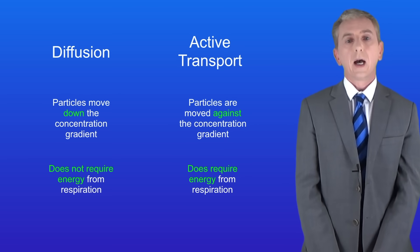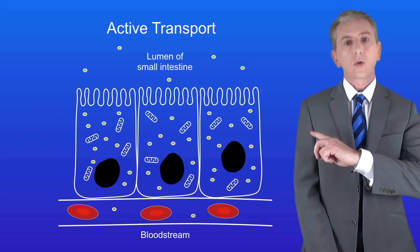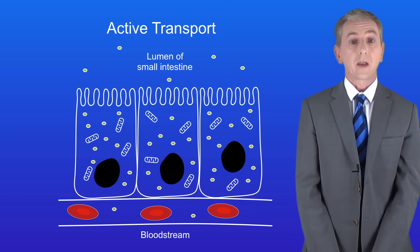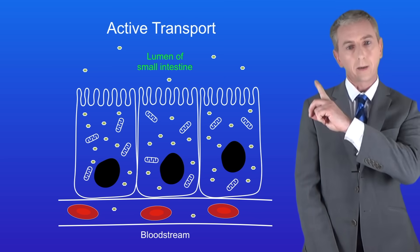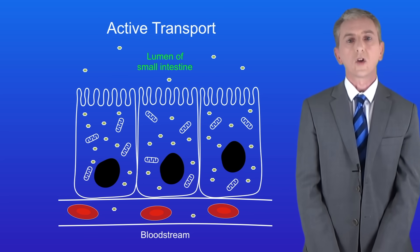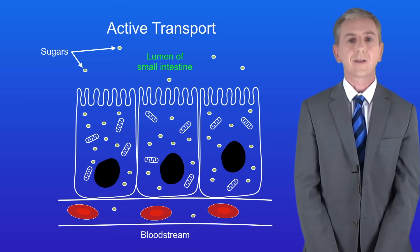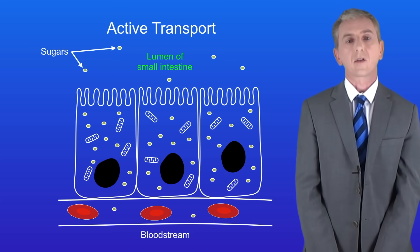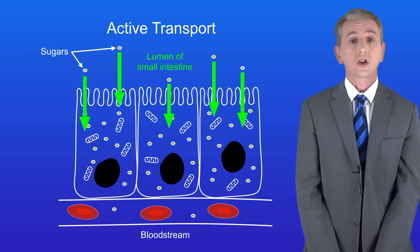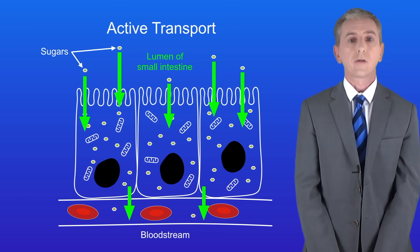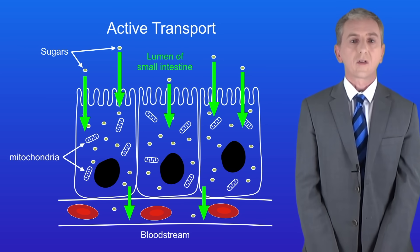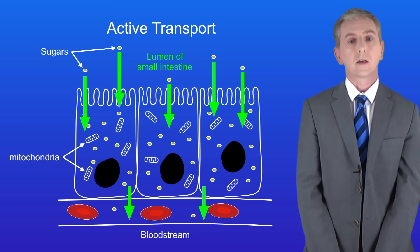We often see active transport in biology, and you need to know two examples. This shows the cells lining the human small intestine. The cavity where food is digested is called the lumen, and in the lumen we find molecules produced when food is digested — a good example being sugars such as glucose. The concentration of sugars in the lumen is lower than inside the cell, so these sugars cannot diffuse in; instead they are carried in by active transport. Once inside, the sugars are transported into the blood and carried around the body. These cells have lots of mitochondria, which carry out respiration to provide the energy needed for active transport.